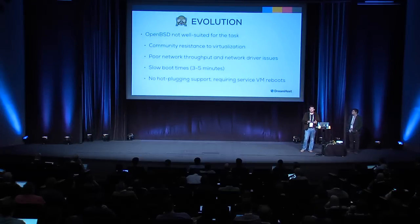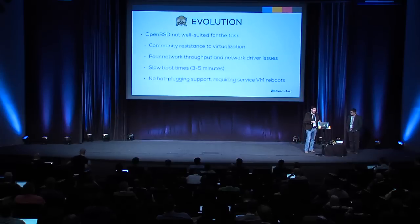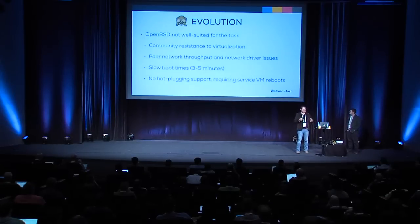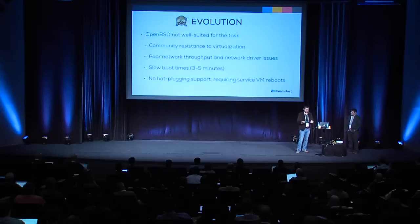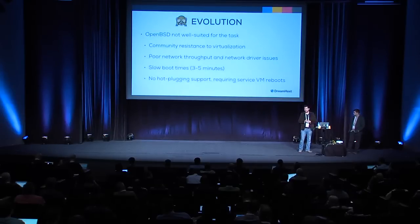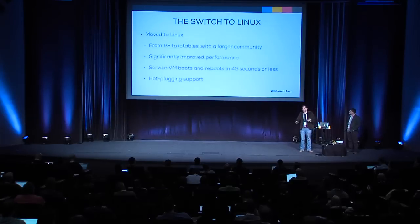We determined that OpenBSD was not well suited for our use case. It's a great OS — we love OpenBSD — but it wasn't quite perfect. There was community resistance in OpenBSD to virtualization. We had issues with drivers and network throughput. Under a virtualized KVM environment, booting an OpenBSD image was taking three to five minutes, which is a very long time. We also needed hot plugging for certain features, and it wasn't quite working well in OpenBSD. We were having to reboot routers and service VMs whenever we wanted to add networks. Since everything else is Linux, naturally we decided to switch.